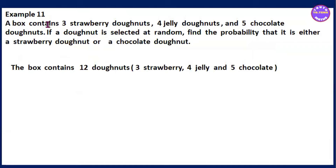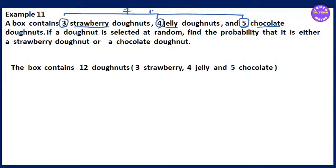So, let's say this is what we need. A box contains doughnuts. There are three strawberry doughnuts, a jelly doughnut, and a chocolate doughnut. There are strawberry, jelly, and chocolate. If a doughnut is selected at random,